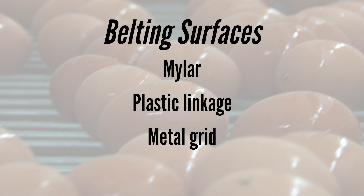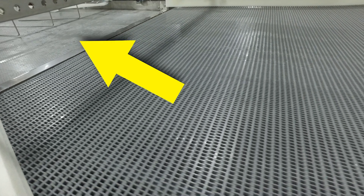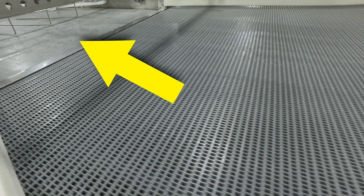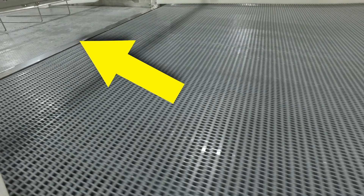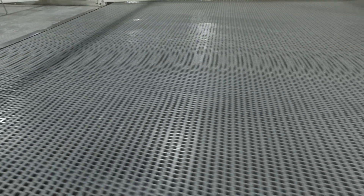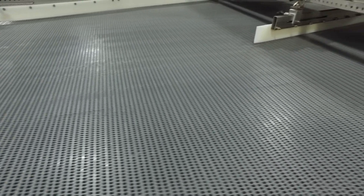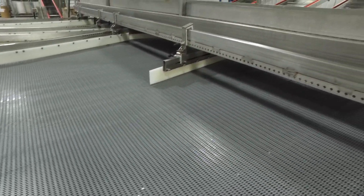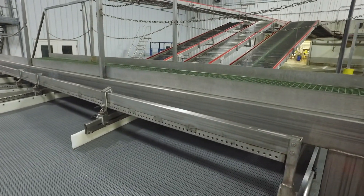Mylar belts should be free from breaks and tears since this can serve as niches for microbial growth. Non-continuous belting surfaces can also impede egg movement, leading to piling of eggs and cracking. Plastic linkage and metal grid belting have large amounts of surface area and should be thoroughly cleaned. Buildup of dirt, soil, shell fragments, and egg meat can serve as reservoirs for microbial growth.